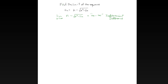Back in the L'Hôpital's rule section we saw how to deal with these. We have to create a fraction, and the way we are going to do that is by resorting to algebra — we have to multiply by the conjugate. So this is over one; multiply top and bottom by n plus the root of n squared minus 11n.